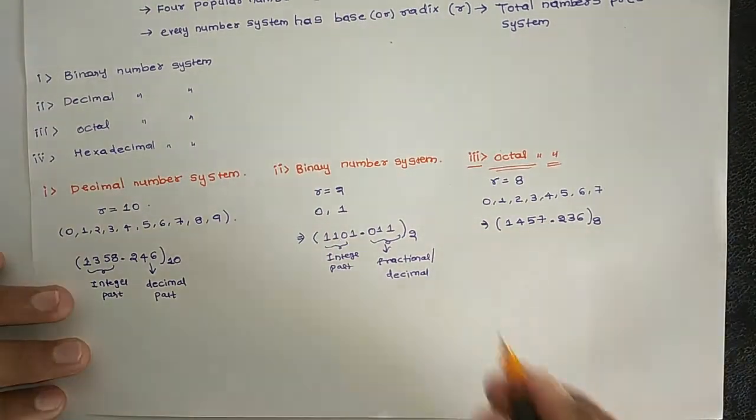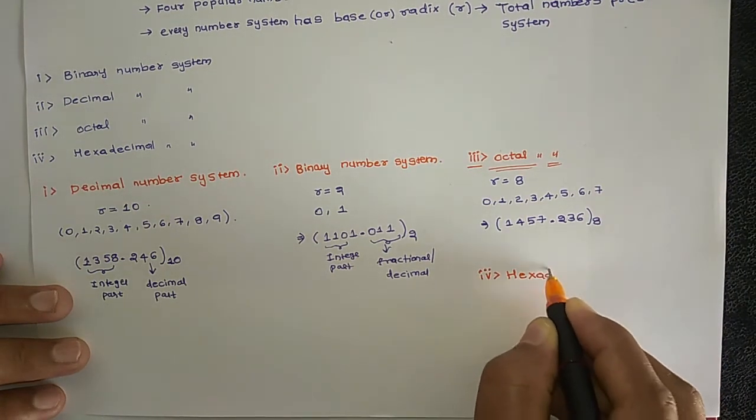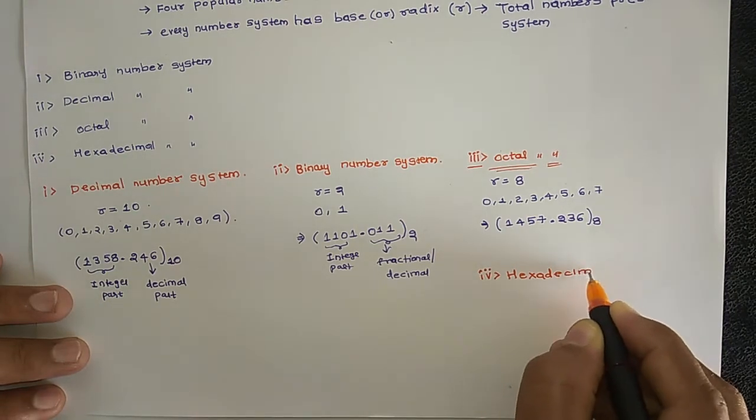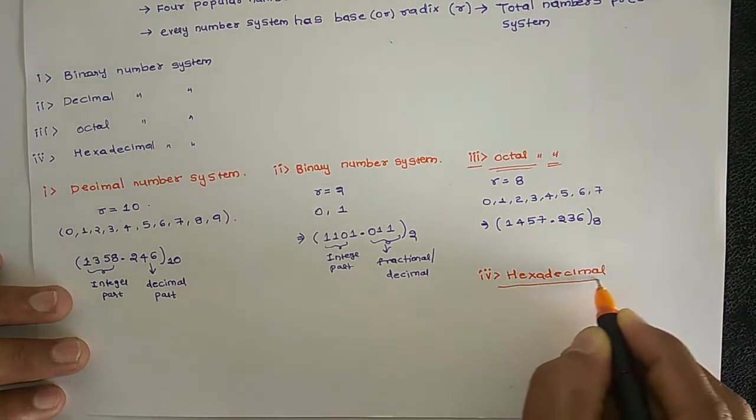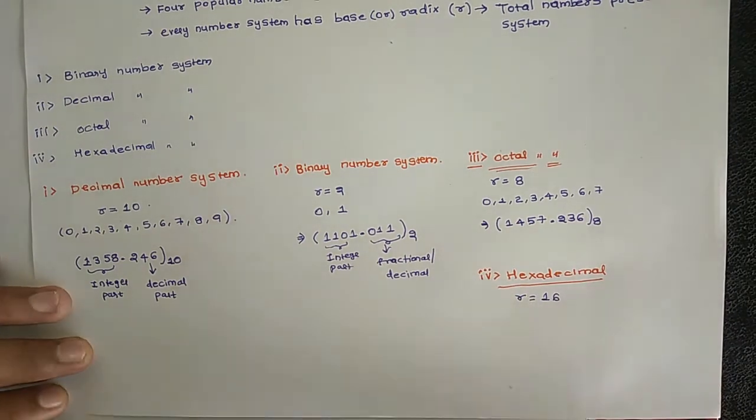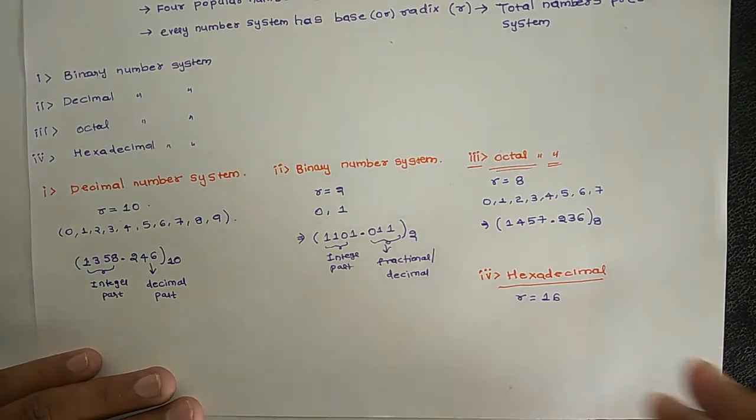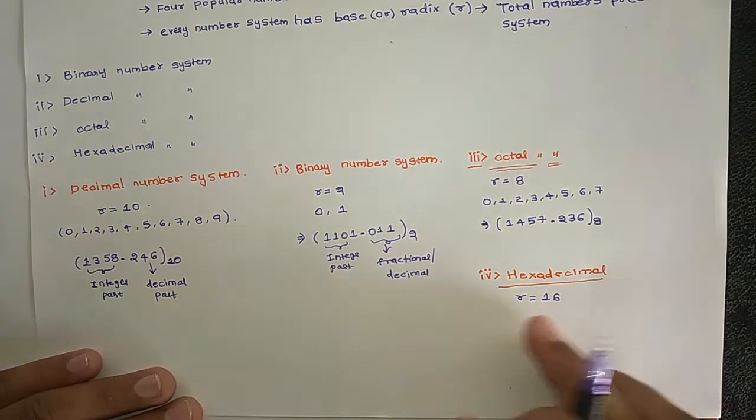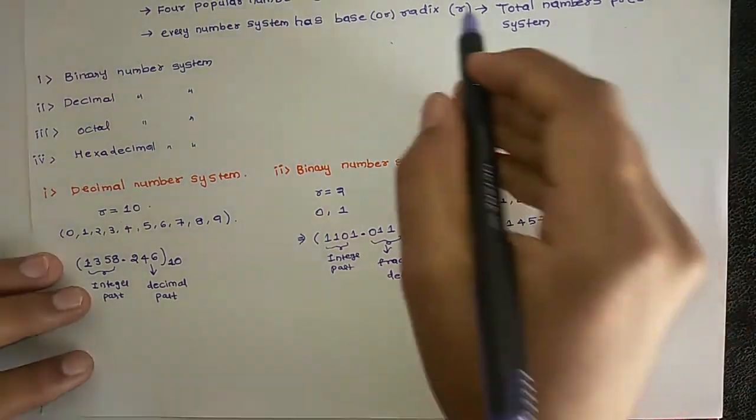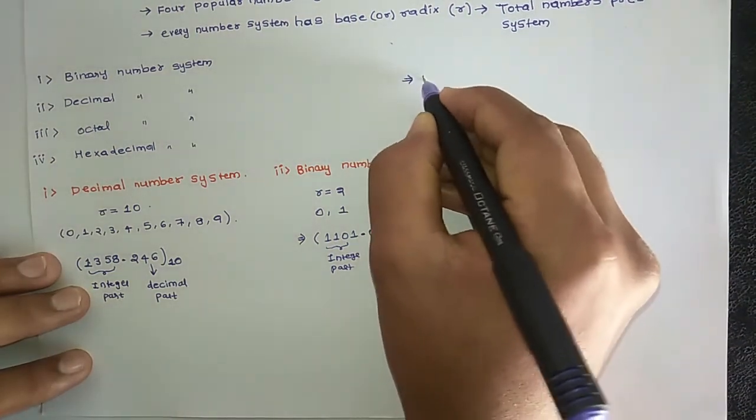The last number system, fourth, is Hexadecimal number system. Hexadecimal has radix 16. Total numbers are 16, since radix is 16. Remember this point: here 0 is included. When radix is r, total numbers in that system will be r, and the maximum number varies from 0 to r minus 1.